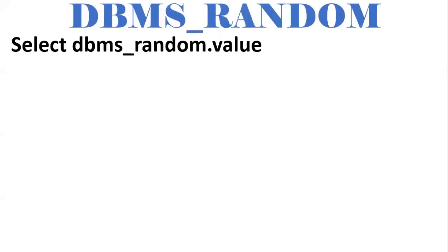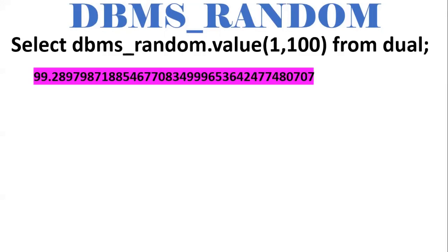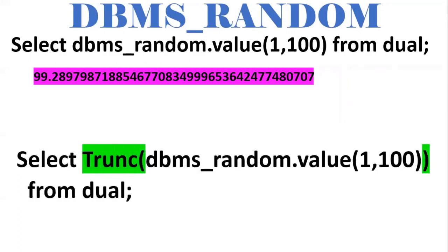Next one is DBMS_RANDOM. This is the Oracle predefined package. It is used to generate one random value from a given range of values. The syntax uses DBMS_RANDOM.VALUE, which has two arguments: starting range and ending range. We are giving 1 as the starting range and 100 as the ending range. A value will be generated between these two ranges — like 99 point something with decimal values. If you want to remove the decimal values, we'll make use of the TRUNC function.